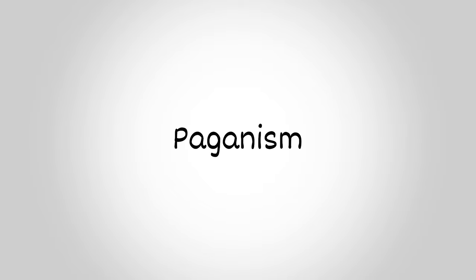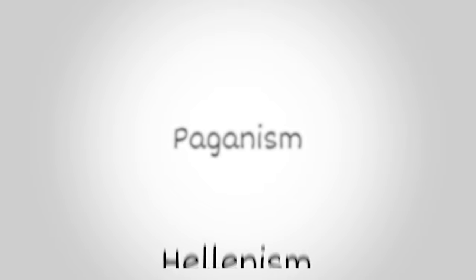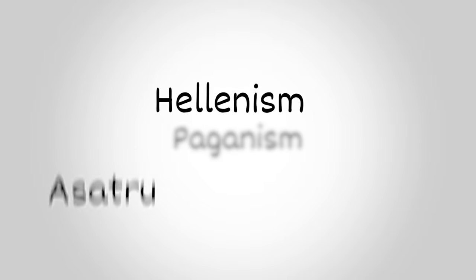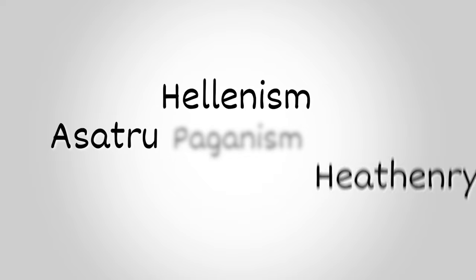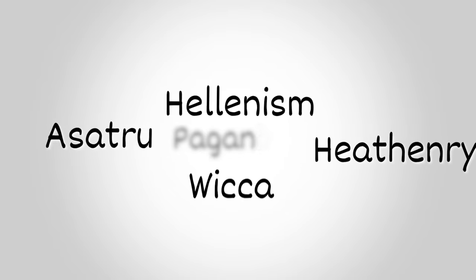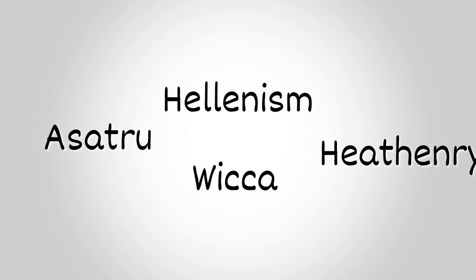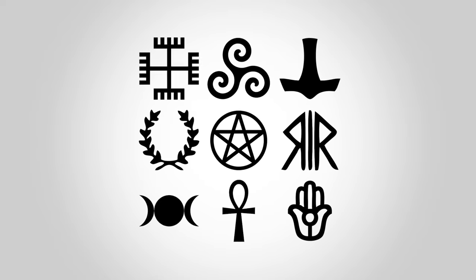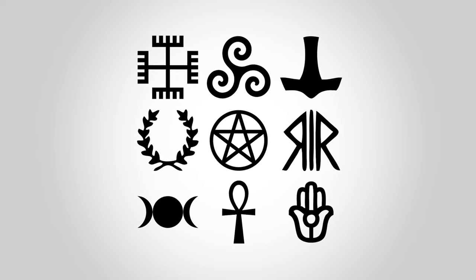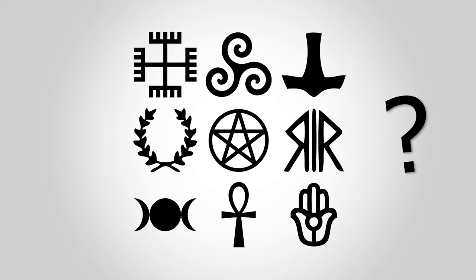There are many types of Paganism, like Hellenism, Asatru, Heathenry, Wicca, and more. So it can be really confusing to tell them apart. What makes each of them stand out, and how do they differ?